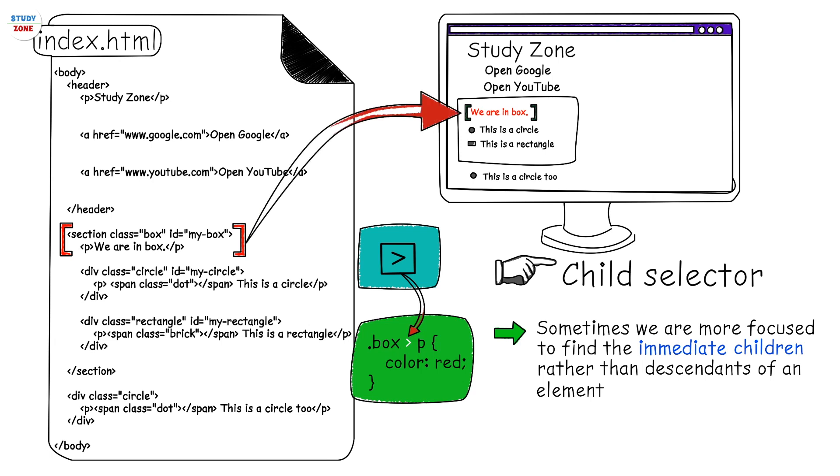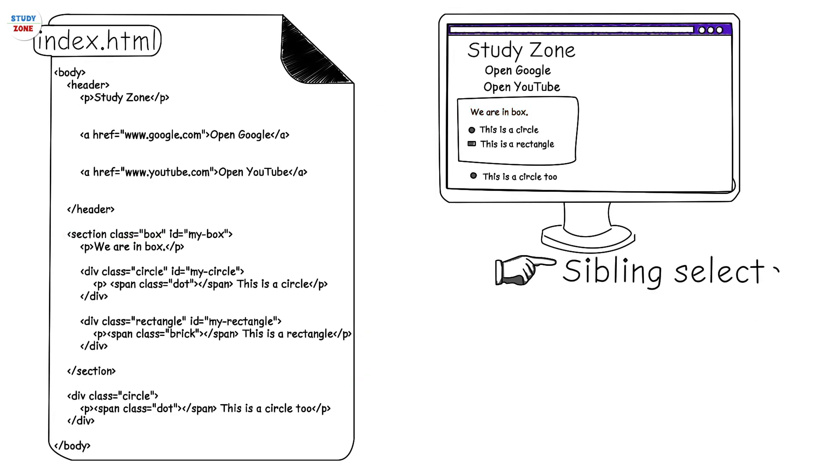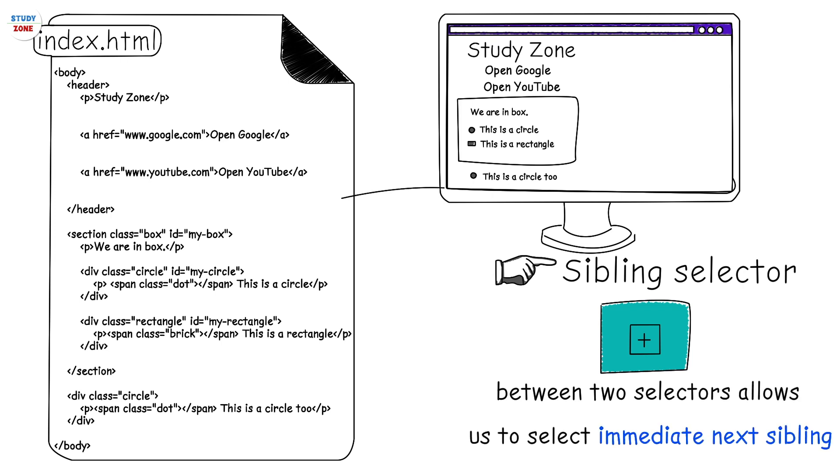Sibling selector: using plus between two selectors allows us to select immediate next sibling. For example, p + a { color: red; } will select all anchor tags which are immediate next siblings to a p tag.